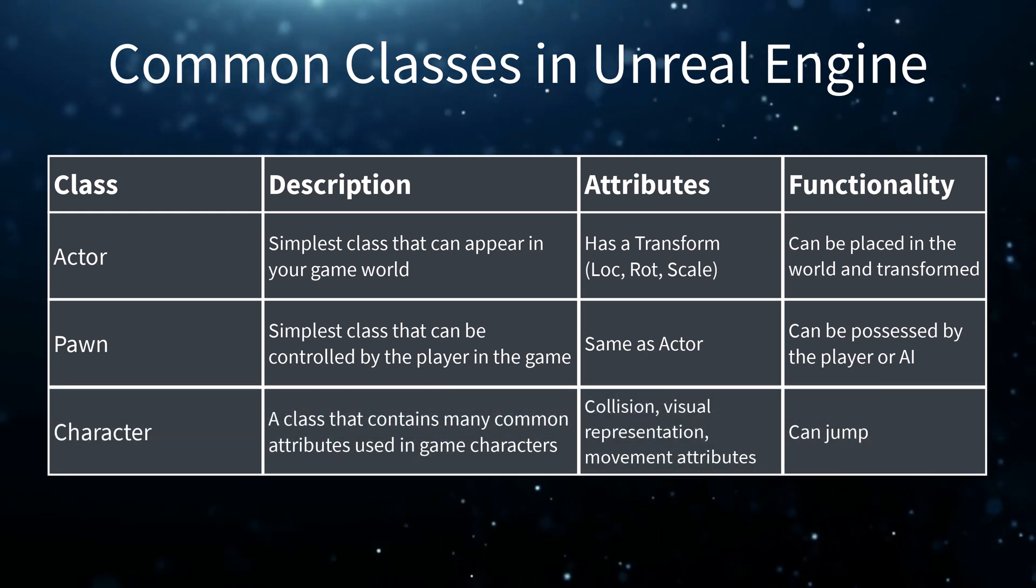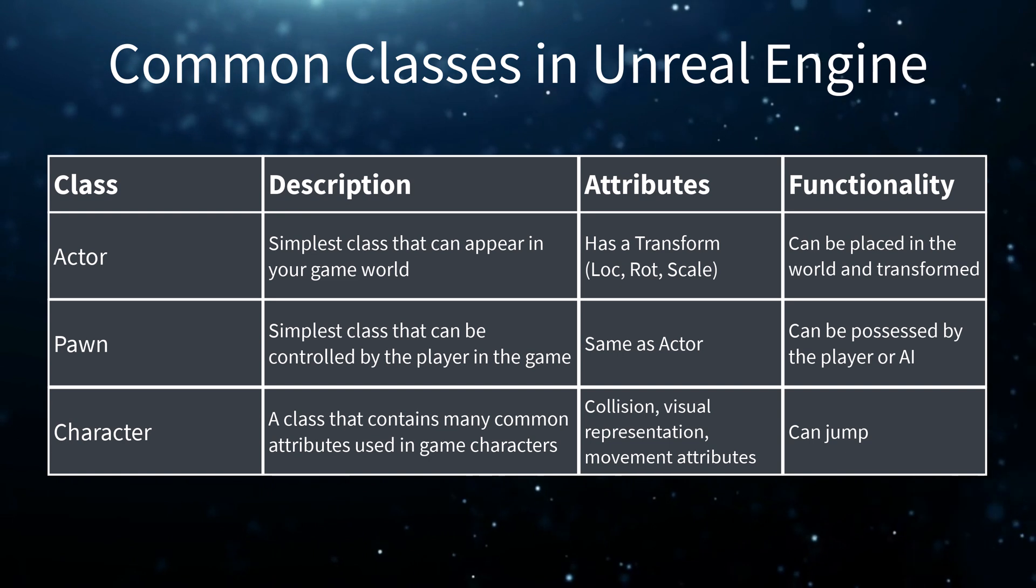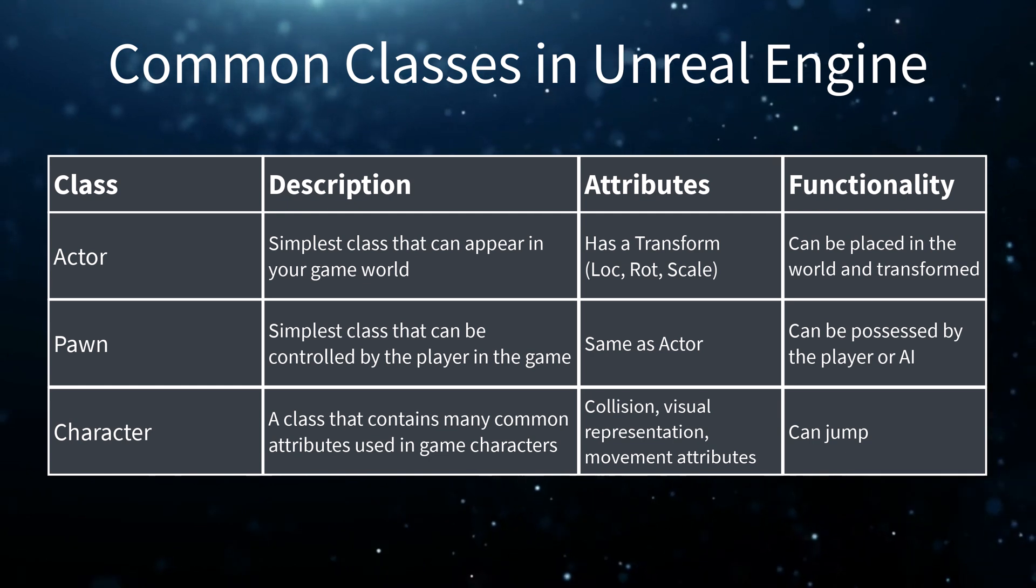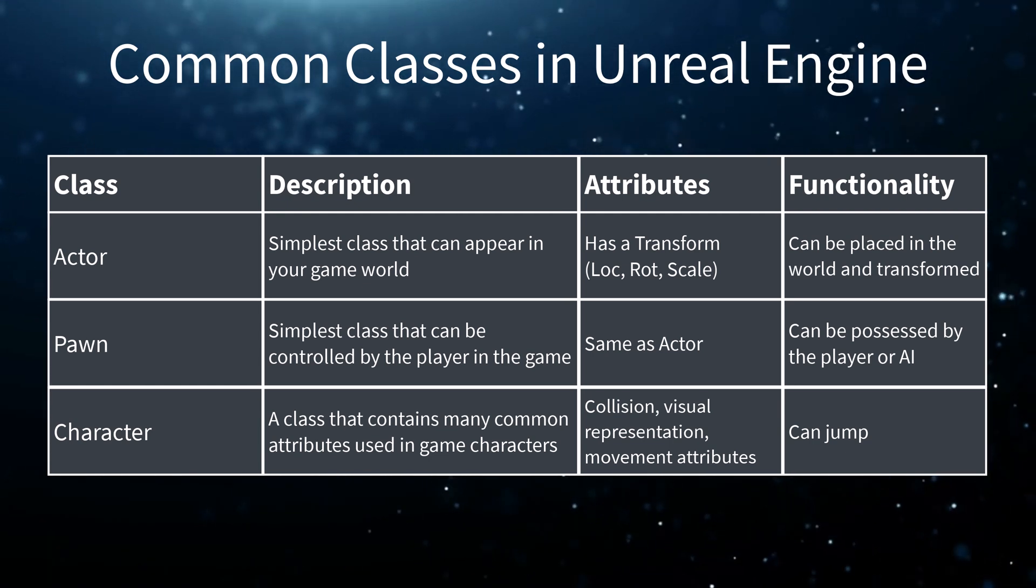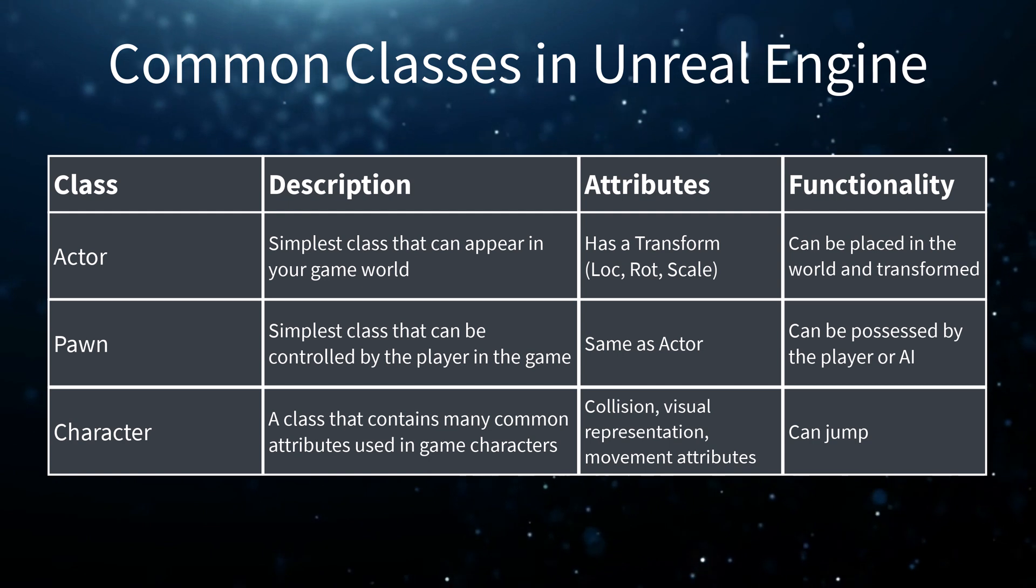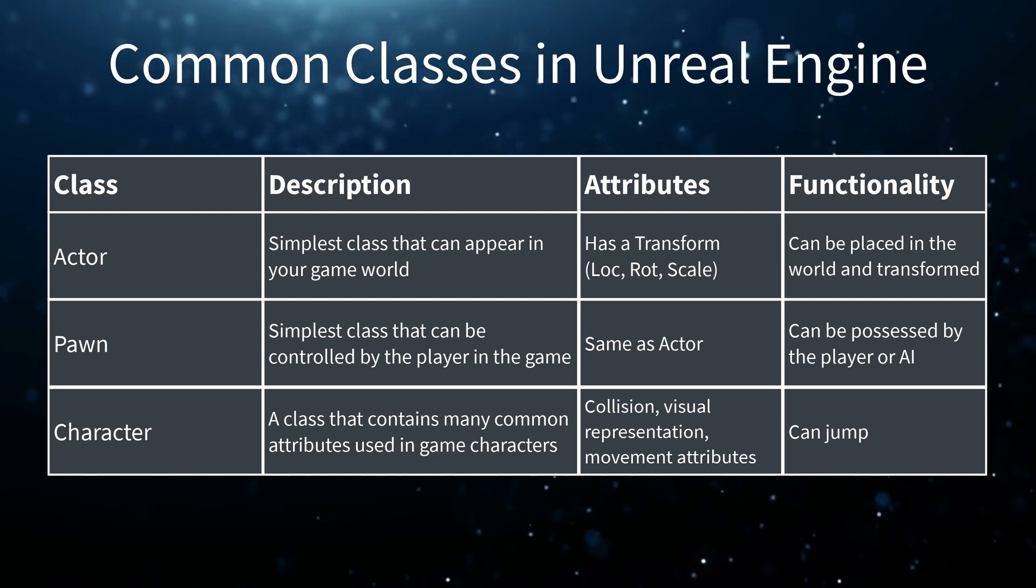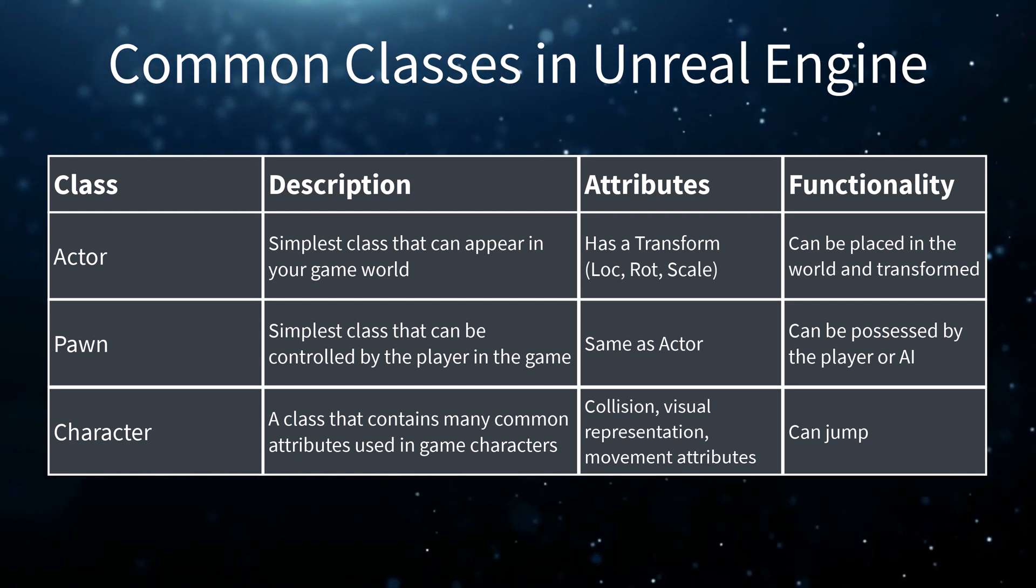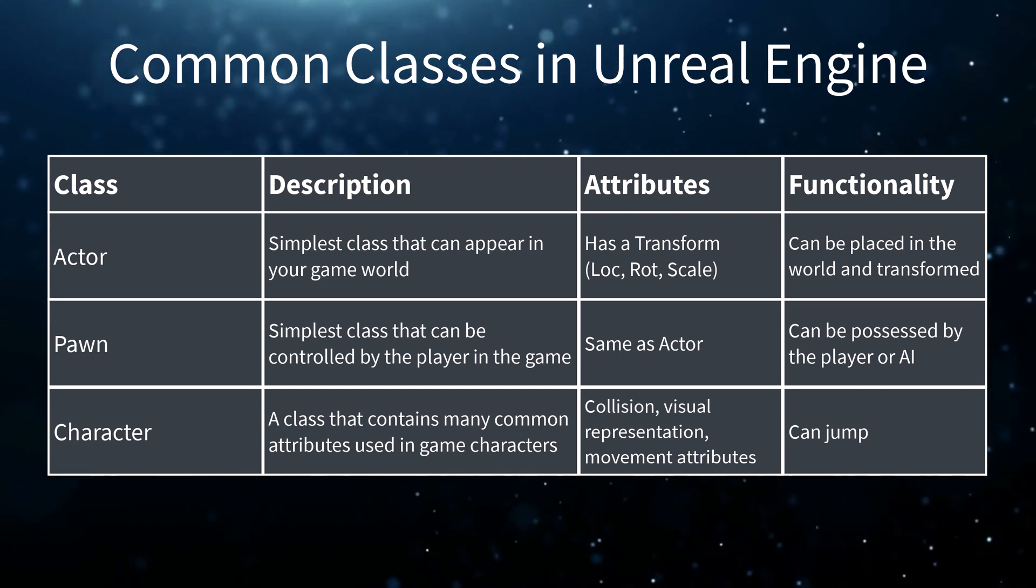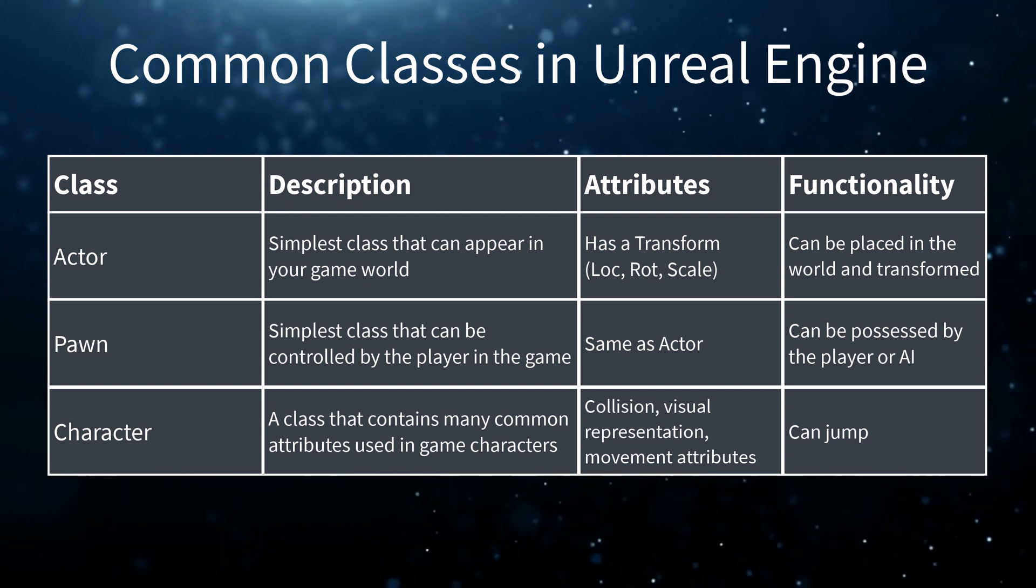The Character class comes with attributes such as collision, visual representation, such as a mesh, and many movement attributes and functionality. It has functionality relevant to humanoid characters, like jumping. So, if you wanted to create an inanimate object, like a door or a lamp, you would use the Actor class. If you wanted to create a character or vehicle that can be controlled by the player or AI, you would use the Pawn class. And finally, if you wanted to create a humanoid character, you would start with the Character class to take advantage of all the pre-built attributes and functionality of that class.